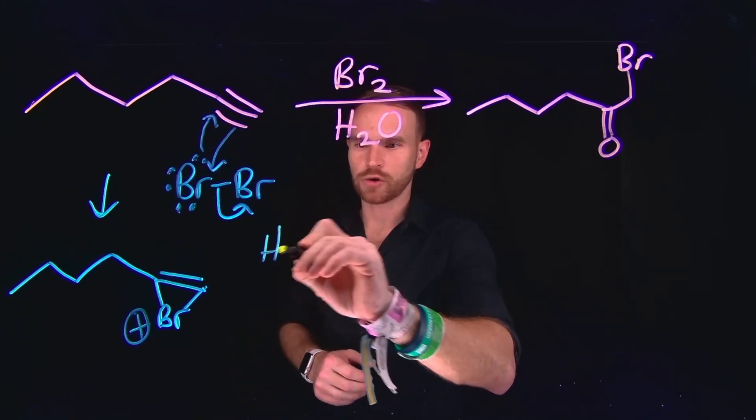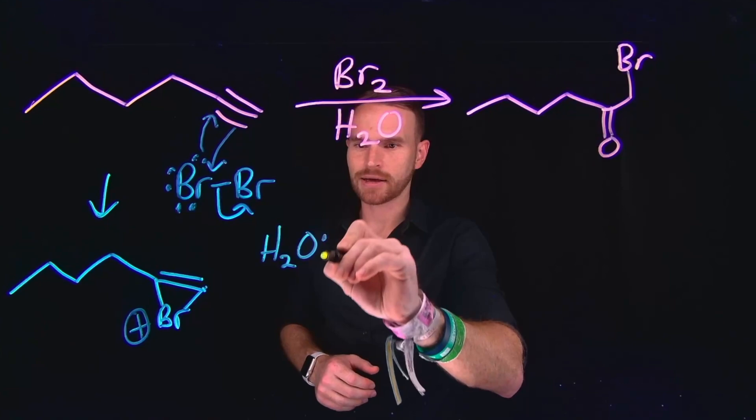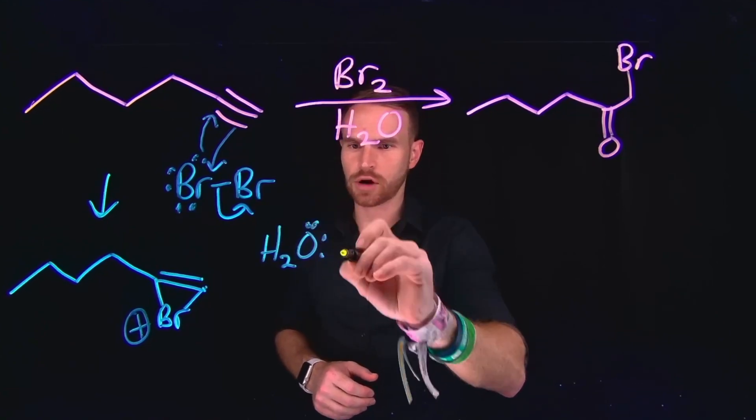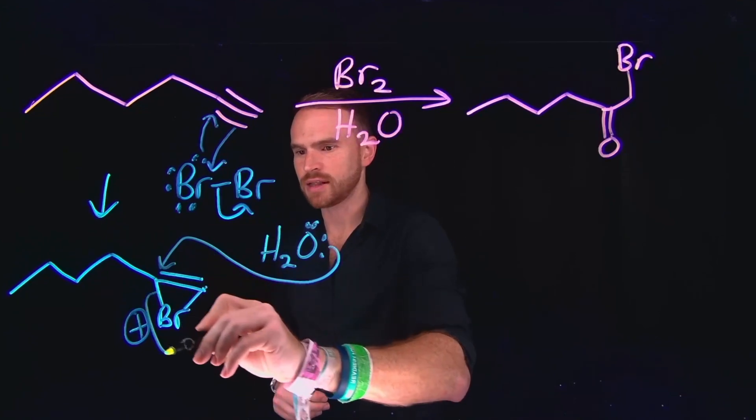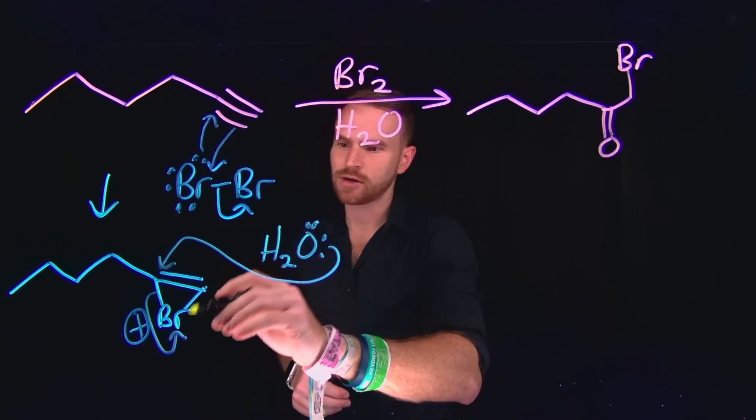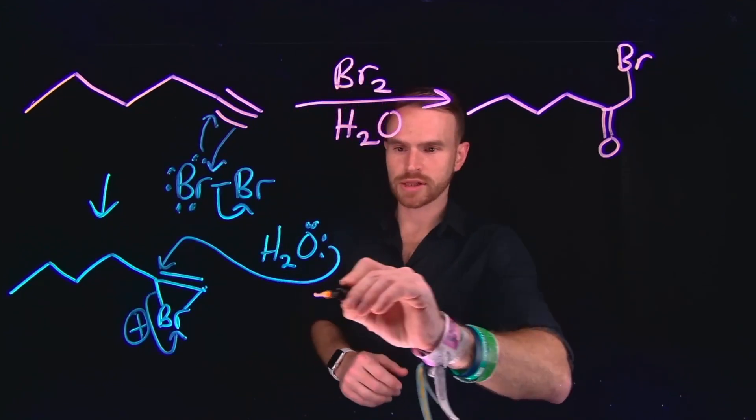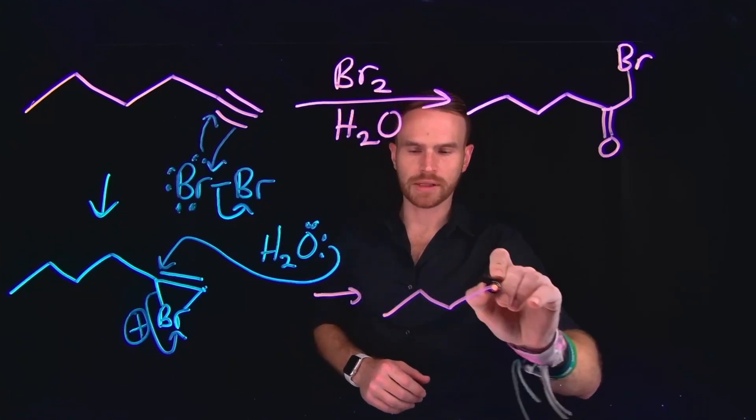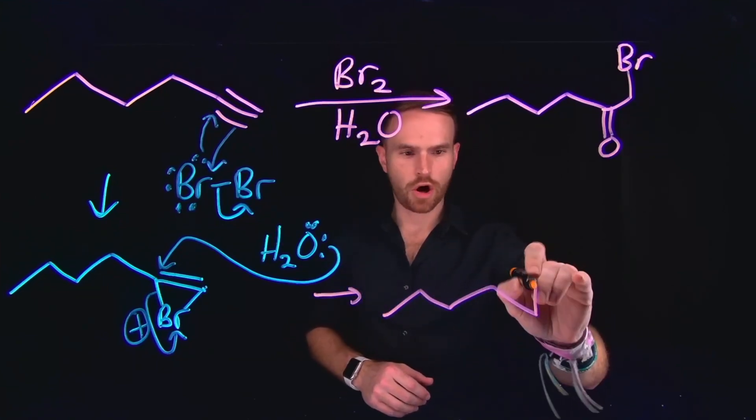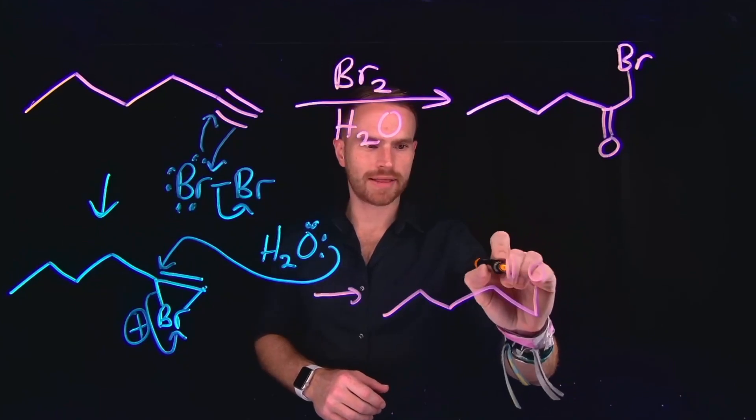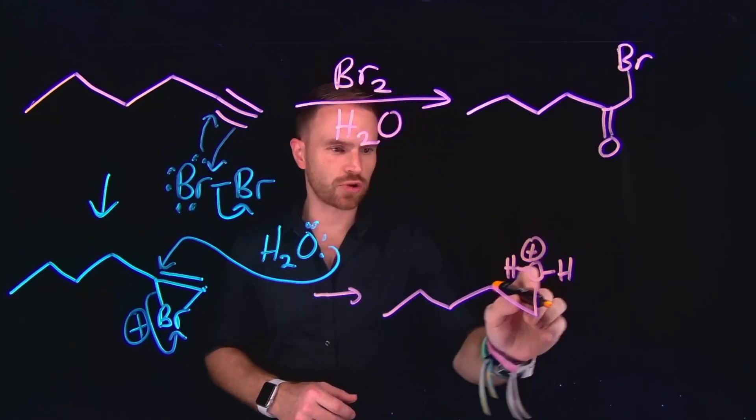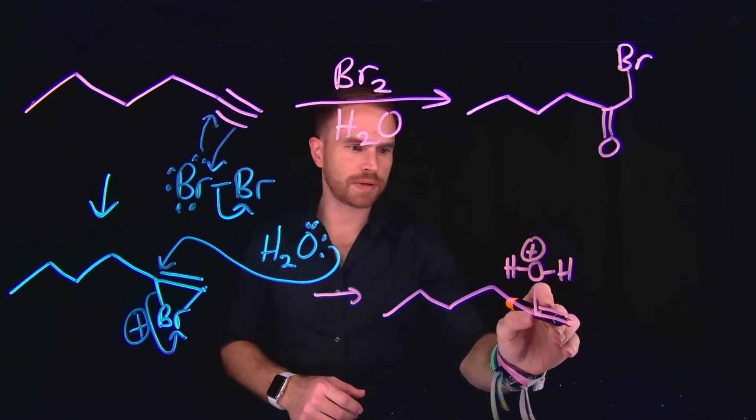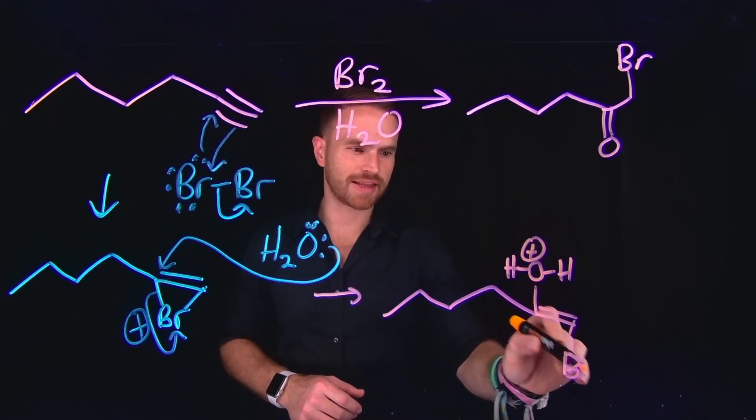From here, our water molecule can come in and attack using the lone pair of electrons on water at this position, which will kick off these electrons and leaving behind a single bond to bromine. Following this nucleophilic attack, the product that we'll be left with contains a OH3 ion at this position. And now this is going to be positively charged, conserving our charges, and then we'll be left with the bromine atom at this position.